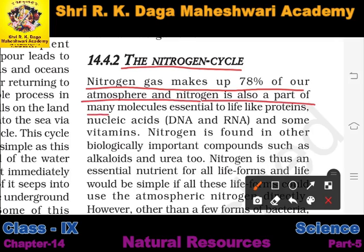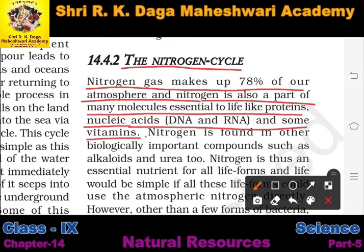Nitrogen is also a part of many molecules essential to life, like proteins, nucleic acids, DNA and RNA, and some vitamins. Nitrogen covers 78% of our atmosphere — meaning nitrogen is the most abundant gas found in our atmosphere. Nitrogen is also found in very important molecules like DNA.